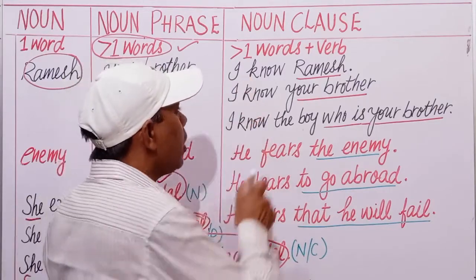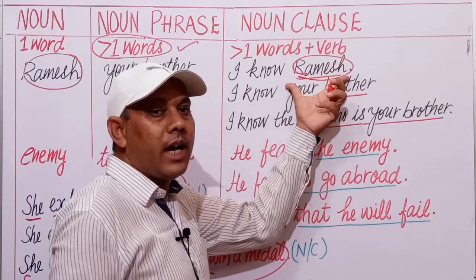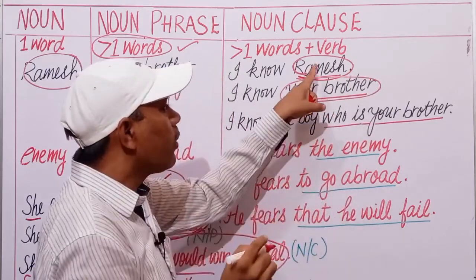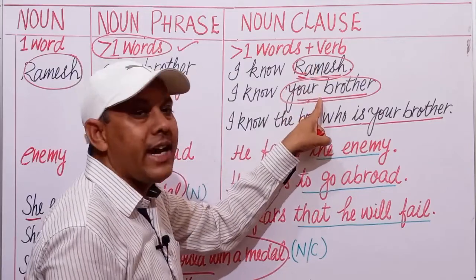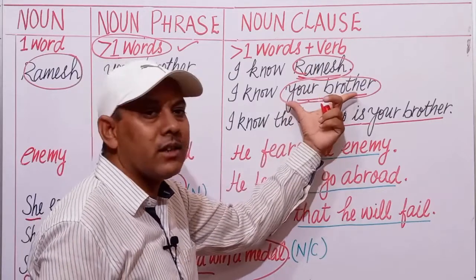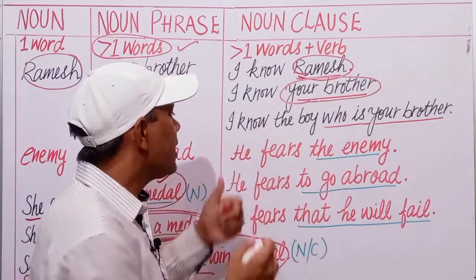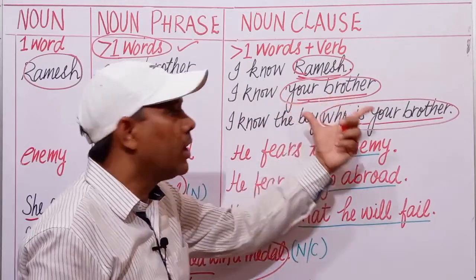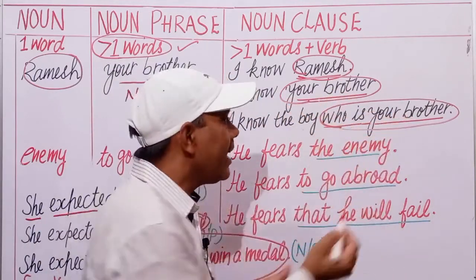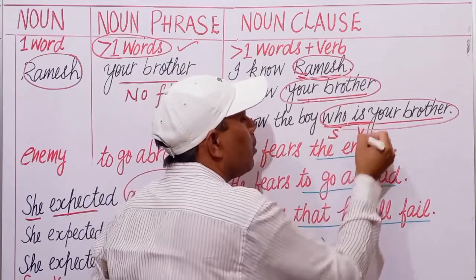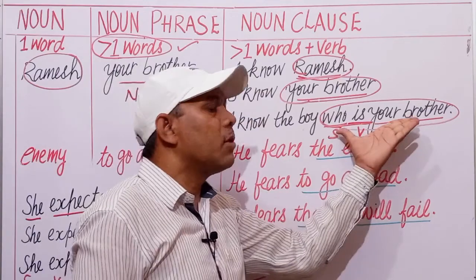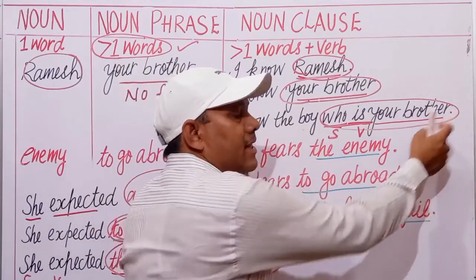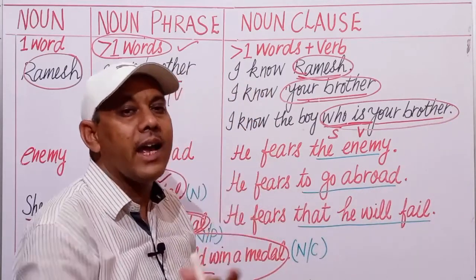Let us take two more examples. 'I know Ramesh.' Replace this noun with a noun phrase: 'I know your brother.' We have replaced 'Ramesh,' a proper noun, with the noun phrase 'your brother,' because there is no finite verb. Next: 'I know the boy who is your brother.' Here the phrase has been replaced with a noun clause — there is a subject and verb combination, and it is a subordinate clause. 'I know a boy' is the main clause, and this sentence has both a subordinate clause and a principal clause.